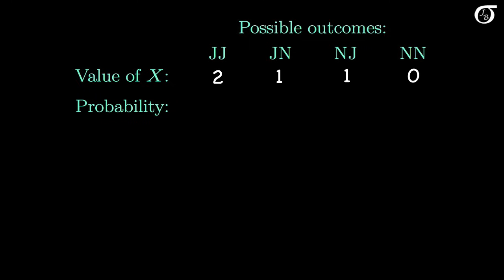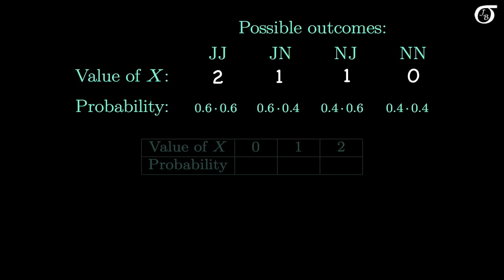Now let's work out the probabilities. The probability a randomly selected full term newborn develops jaundice is approximately 0.6. If we're sampling randomly and independently, we can multiply the two probabilities together. So the probability both newborns develop jaundice is 0.6 × 0.6. The probability the first develops jaundice and the second doesn't is 0.6 × 0.4. The probability the first doesn't and the second does is 0.4 × 0.6. And the probability they both do not have jaundice is 0.4 × 0.4.